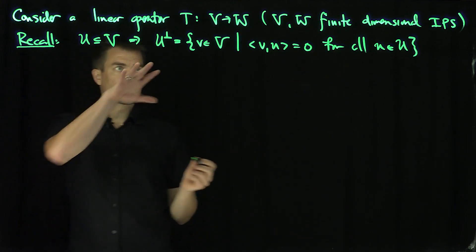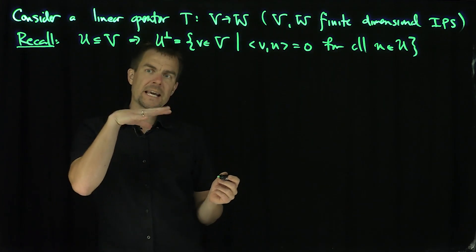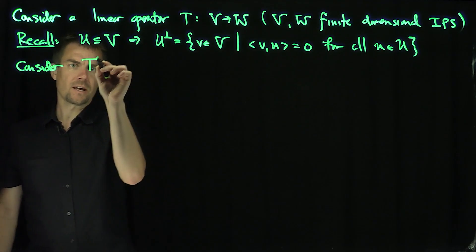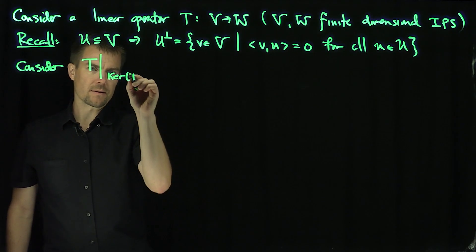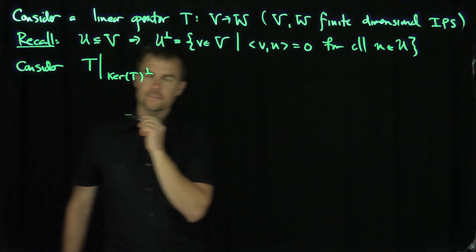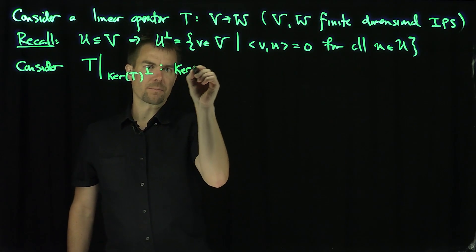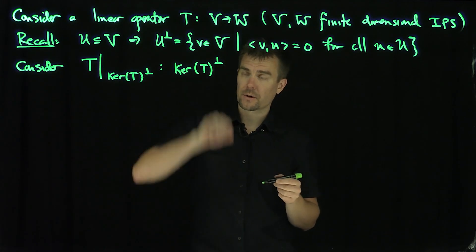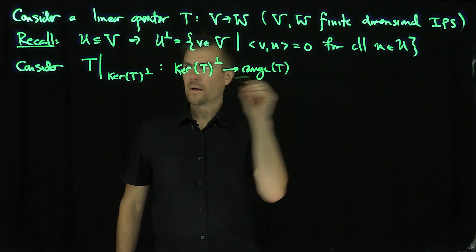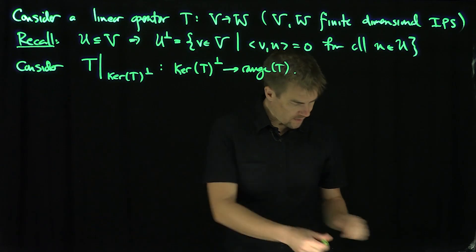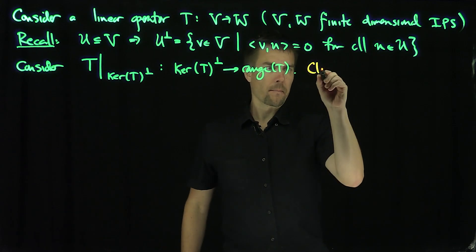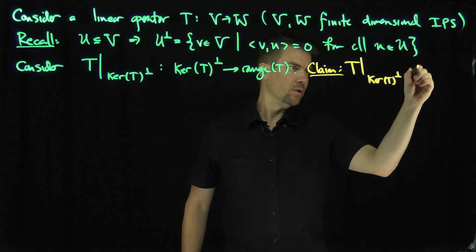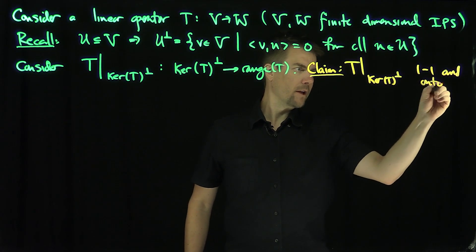This allows us to consider the restriction of this map T onto what's perpendicular to its kernel. Consider T restricted to the kernel of T perpendicular — that's definitely a subspace. This map goes from the kernel of T perpendicular, and the kernel is where T of anything in the kernel is zero, onto the range of T. Our claim is that this is a one-to-one and onto — injective and surjective — mapping.